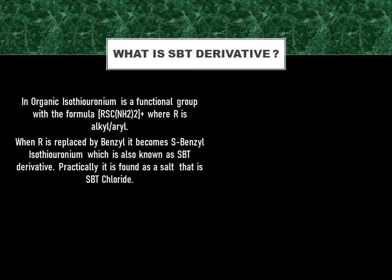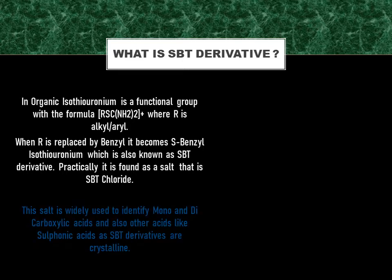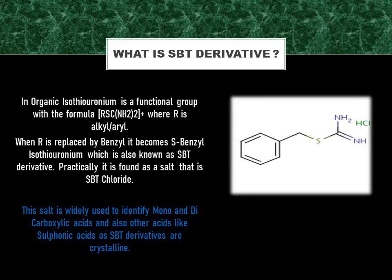Now the question arises: why do we need SBT derivative? We need it to identify mono and dicarboxylic acids, and also other acids like sulfonic acids. And why is it able to identify them? Due to its crystalline nature. Here is the structure of SBT chloride.